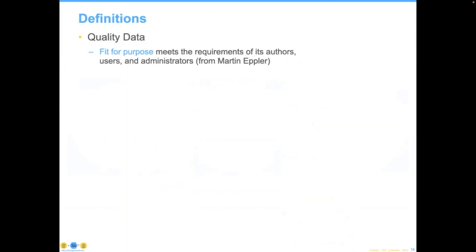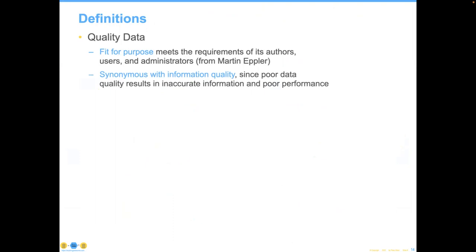Let's dive in for a couple of definitions. Our definition collectively used in the industry is that quality data is data that is fit for purpose — thank you, Martin Epler, for a really good definition. And of course it has to be synonymous with information quality. Many organizations try to distinguish between the two, but if you understand that data is a combination of a fact paired with a meaning, and that information is data provided in response to a request, you'll understand you cannot do information quality without data quality as well.